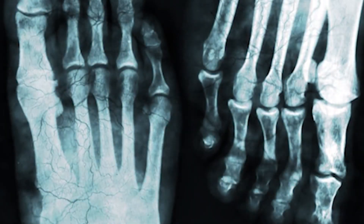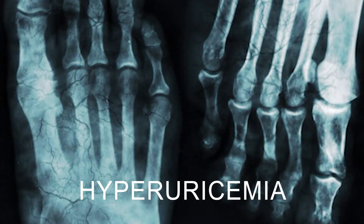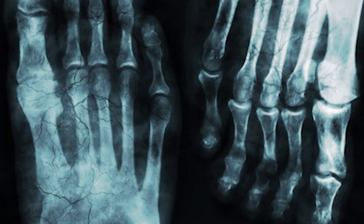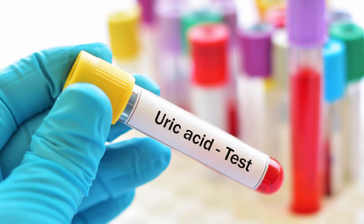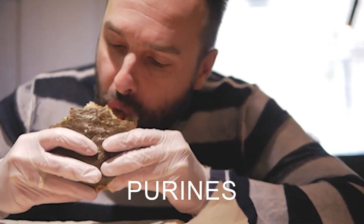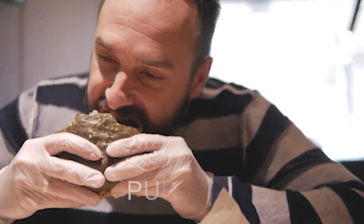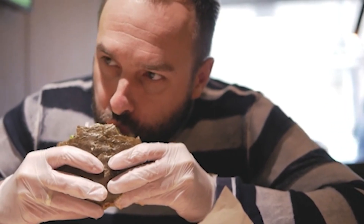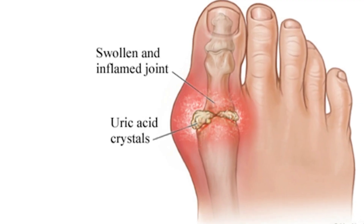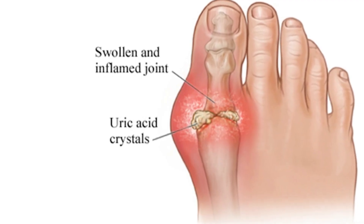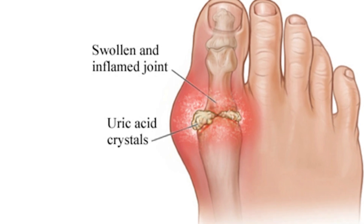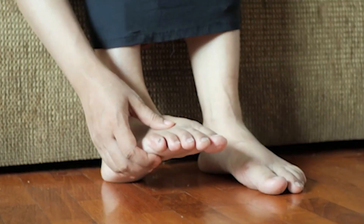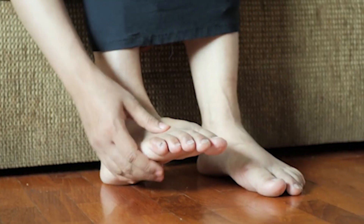Gout is caused by a condition known as hyperuricemia, where there is too much uric acid in the body. The body makes uric acid when it breaks down purines, which are found in your body and the foods you eat. When there is too much uric acid in the body, uric acid crystals, or monosodium urate, can build up in joints, fluids, and tissues within the body.